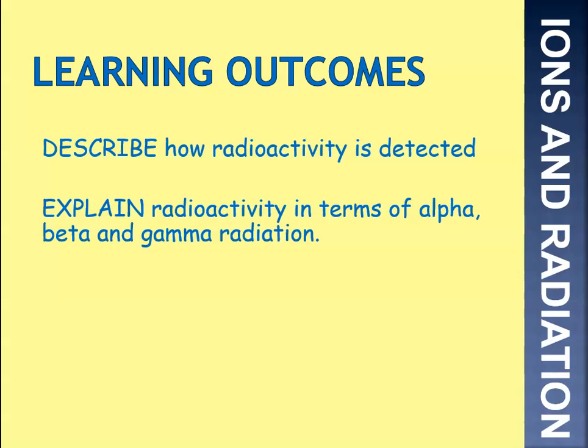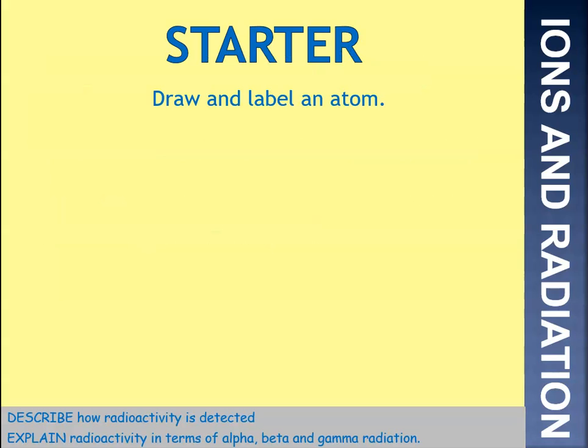Our learning outcomes: describe how radioactivity is detected, and explain radioactivity in terms of alpha, beta, and gamma radiation. First thing — draw and label an atom. Pause the video whilst you attempt that.